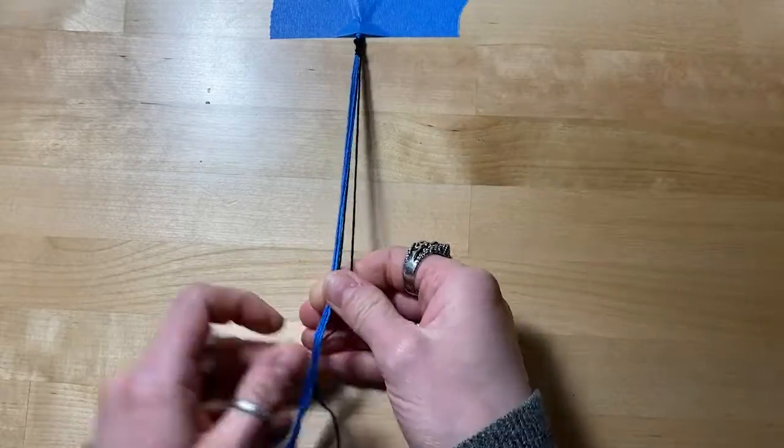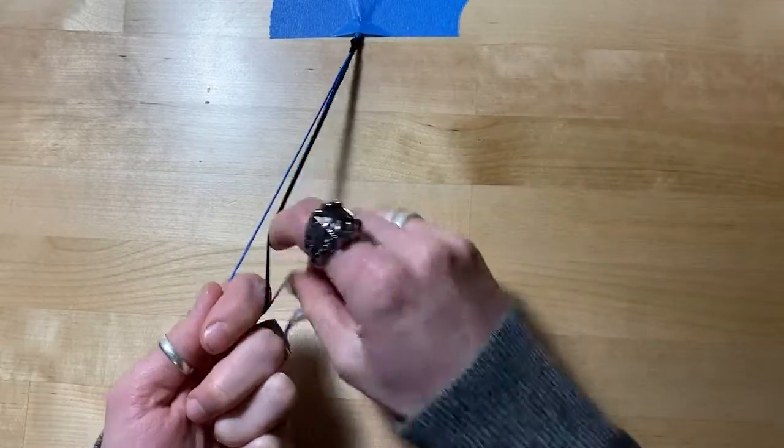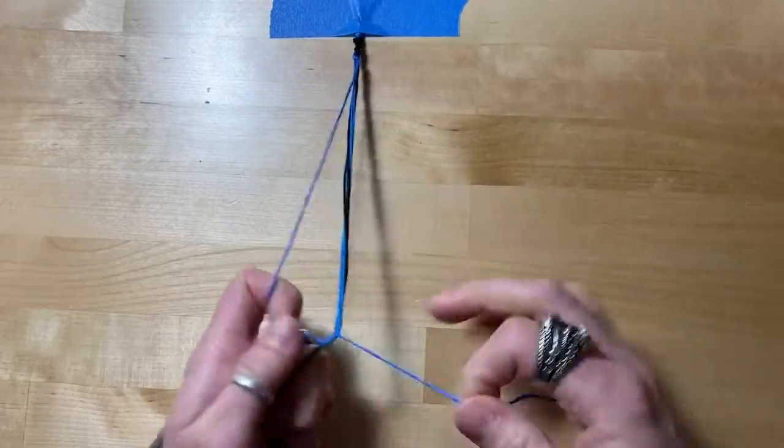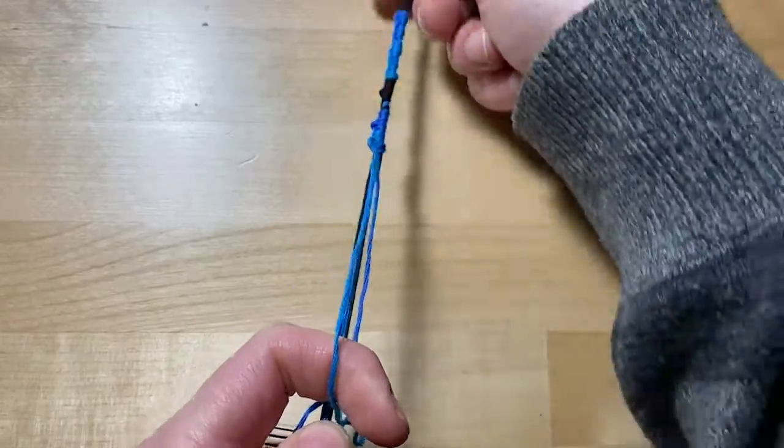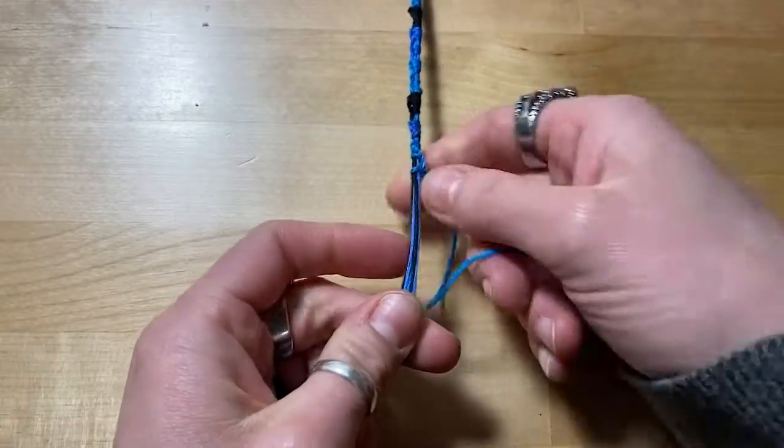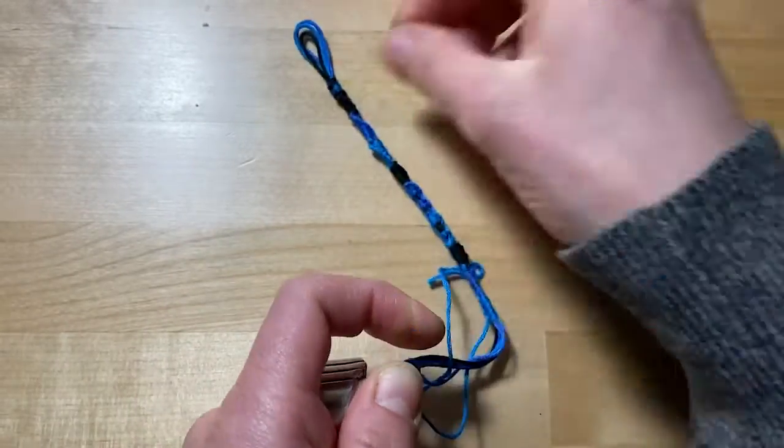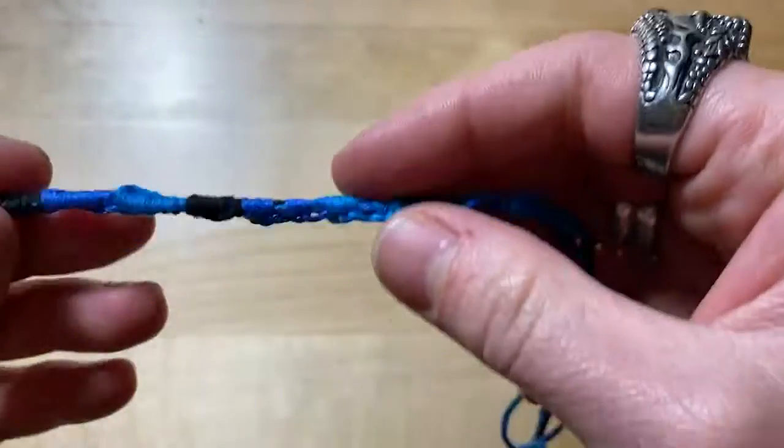When it's time to change color, just put that first color down with the rest and then take your next one and do the same thing. We're going to make a four, loop around and then tighten up that knot at the top, and then continue on until you reach the length that your bracelet needs to be.